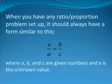Once you have any ratio proportion problem set up, it should always have a form similar to this: X divided by A is equal to B divided by C, where A, B, and C are given numbers and X is the unknown value.